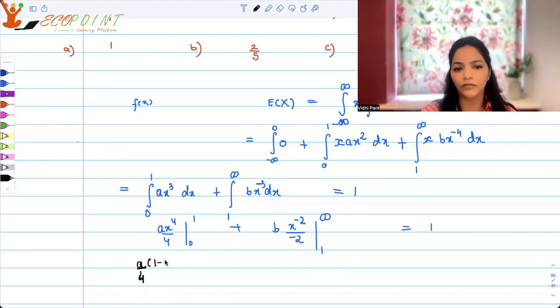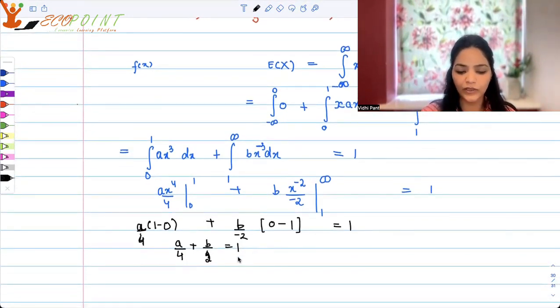Because it's just 1 minus 0 here. Plus here, it's actually a minus sign b upon minus 2. But then let's put the bounds. When you put x to the power minus 2 and x is infinity, infinity to the power minus 2 means infinity is in the denominator, so you will get 0. And then 1 to the power minus 2 gives you 1, so you will get 0 minus 1 from here. In other words, what you will get is a by 4 plus b by 2 is equal to 1.